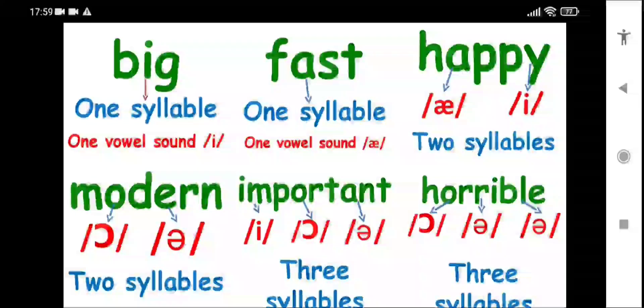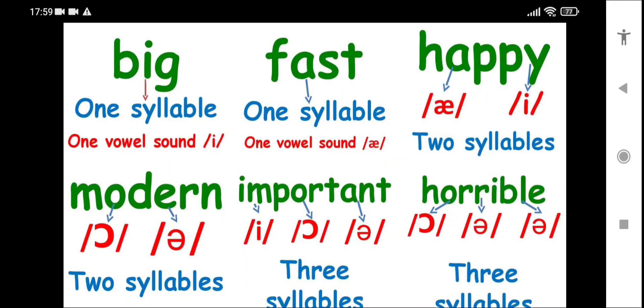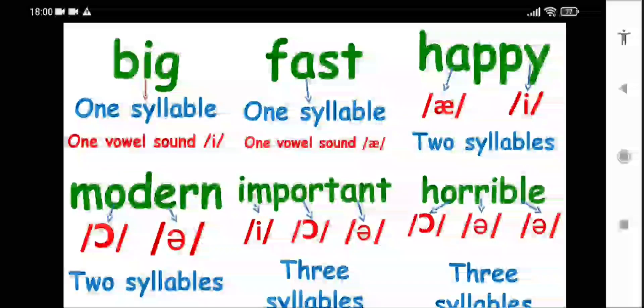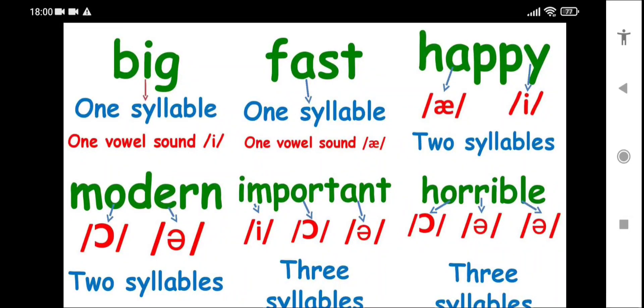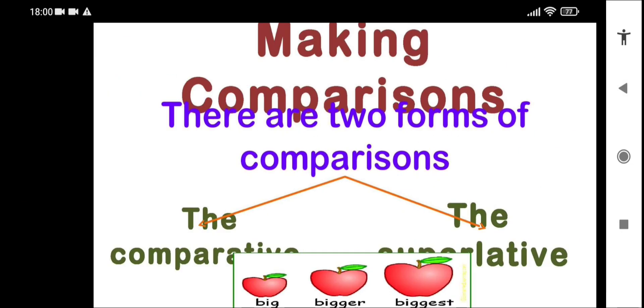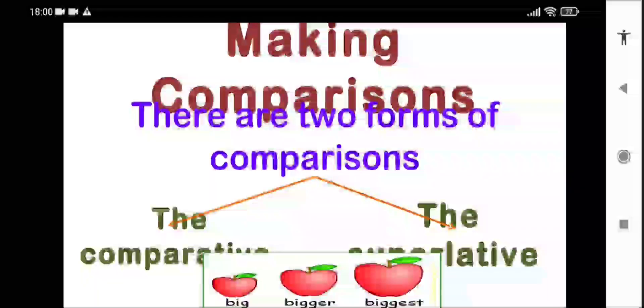Important - we have three syllables. Horrible - three syllables. Making a comparison.